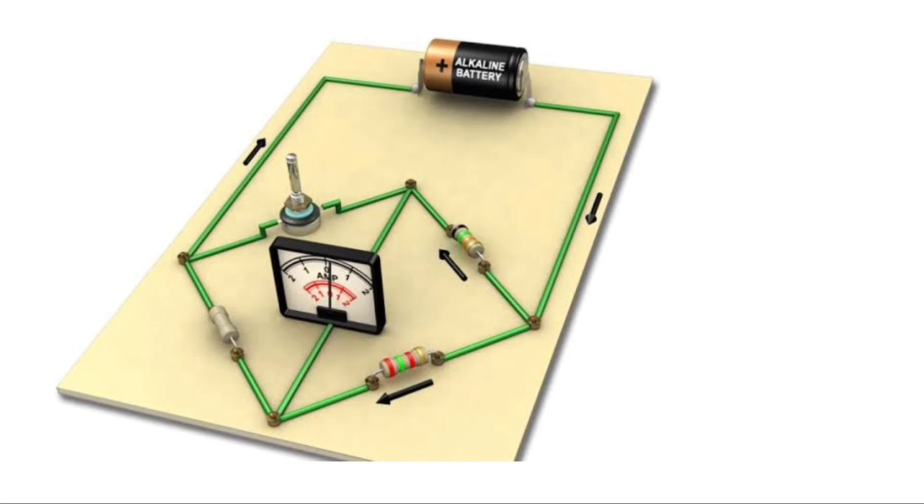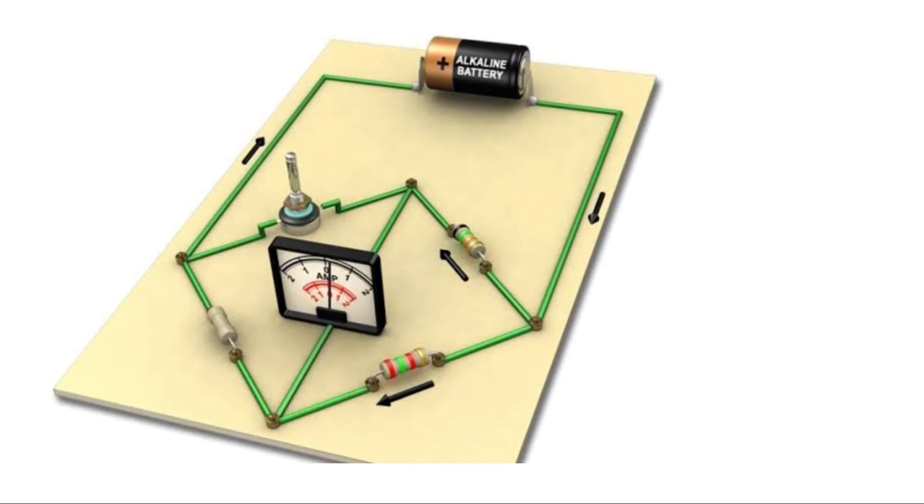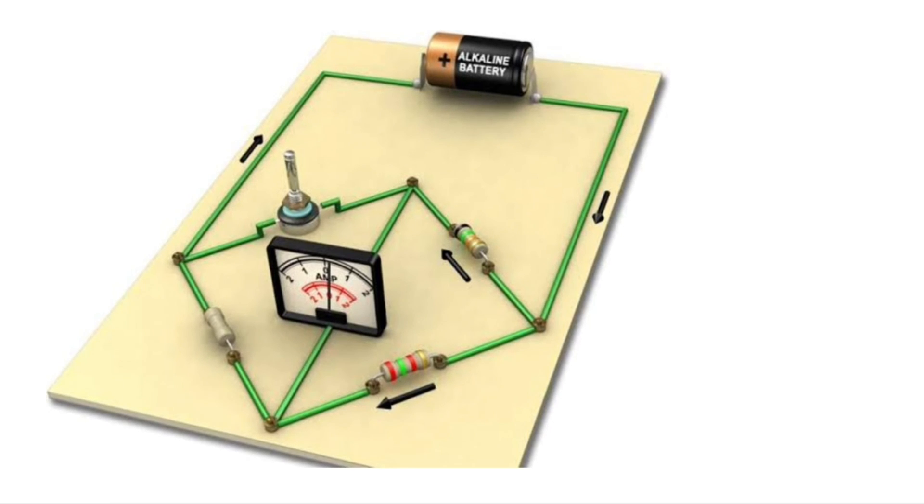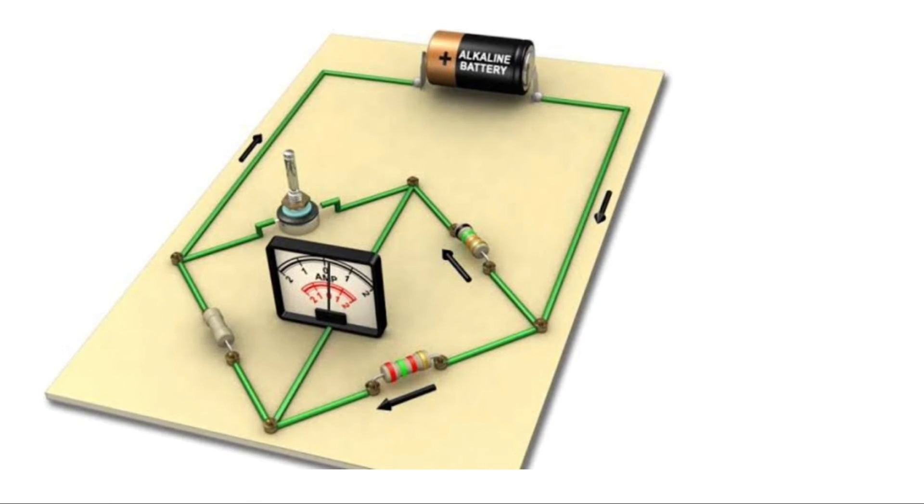As the RTD is inserted into the oven, the RTD temperature increases and correspondingly the voltage indicated by the voltmeter also increases.